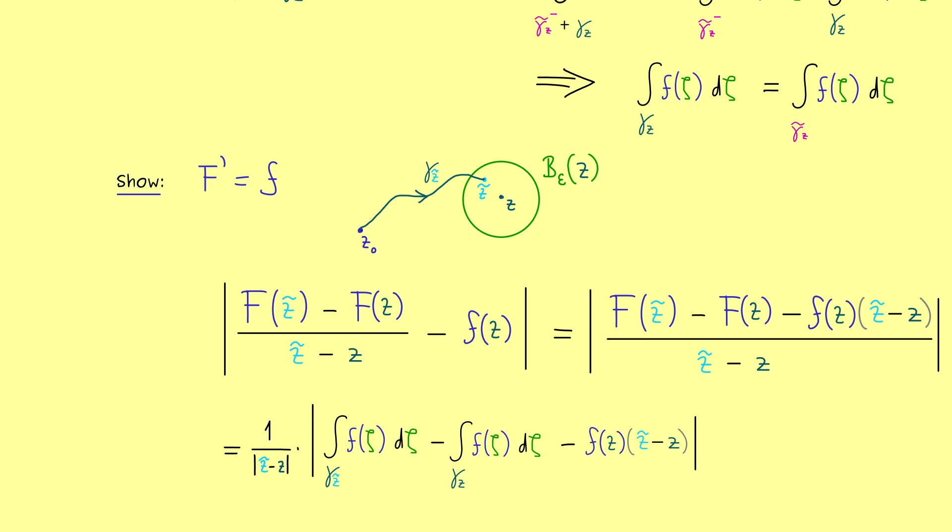And the second curve starts at the same point, but goes to z. And now you should see, we can use the same idea as above and use a closed curve to describe the whole thing. In other words, we simply can connect z tilde with z and then we have a closed curve, where we know that the contour integral has to be 0.